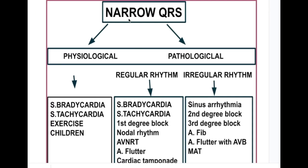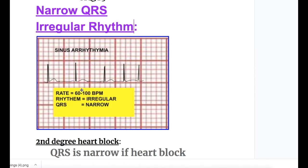Now we will discuss narrow QRS with irregular rhythm. First is sinus arrhythmia. In sinus arrhythmia the rate is 60 to 100 beats per minute, the rhythm is irregular, and the QRS complexes are narrow.